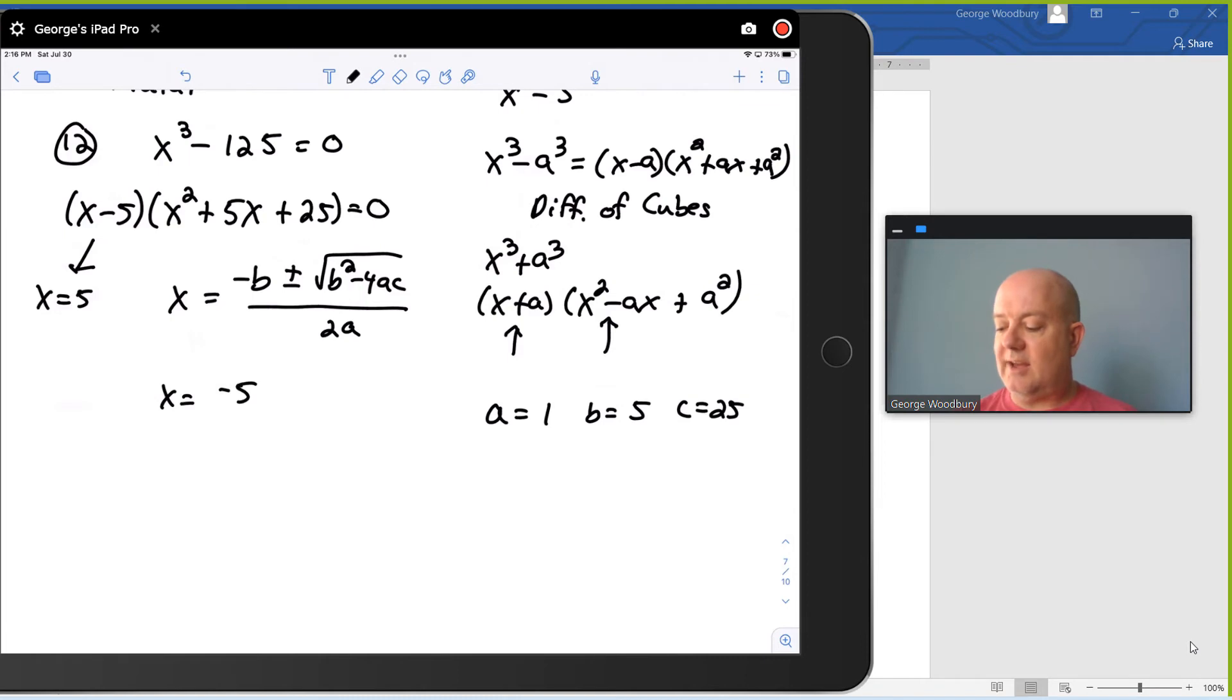The opposite of b, that's negative 5 plus or minus square root b squared, that's 5 squared, minus 4 times a, which is 1, times c, which is 25, all over 2a, or 2 times 1.